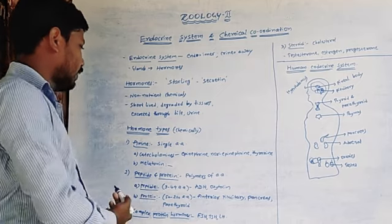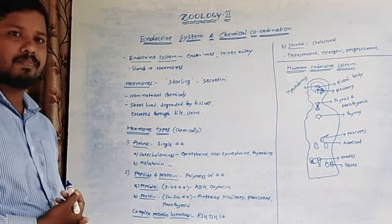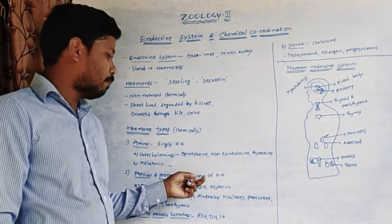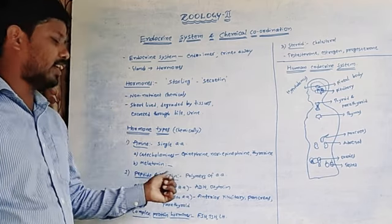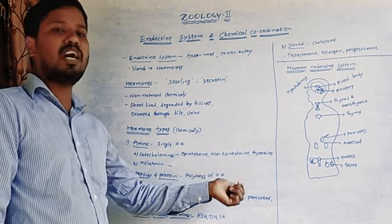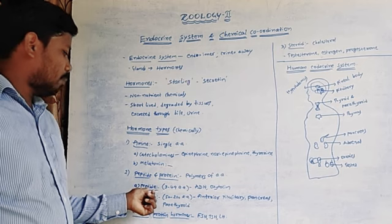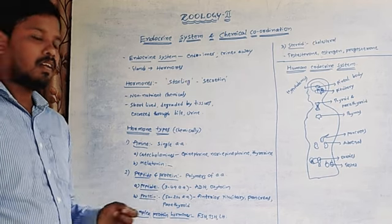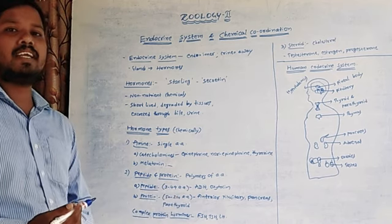The second type of hormones are peptide and protein hormones. These are derivatives of polymers of amino acids. Peptide hormones are composed of 3 to 49 amino acids.